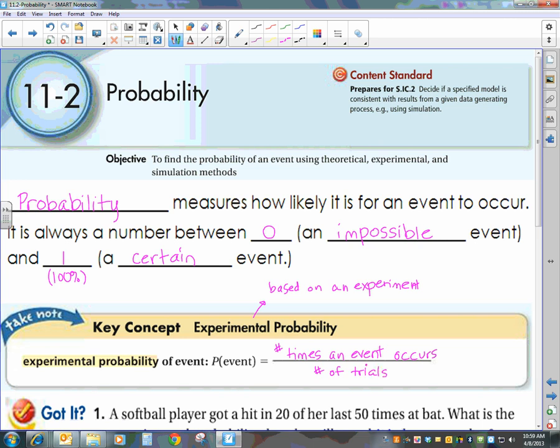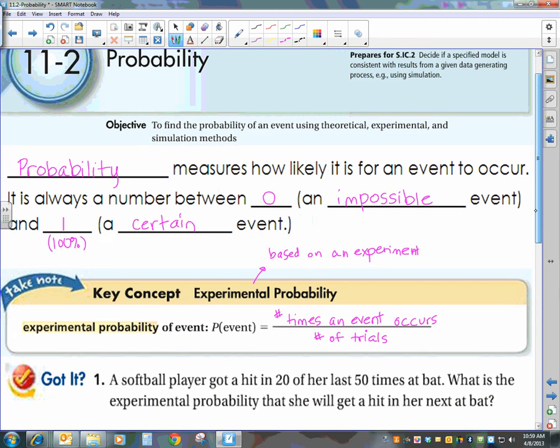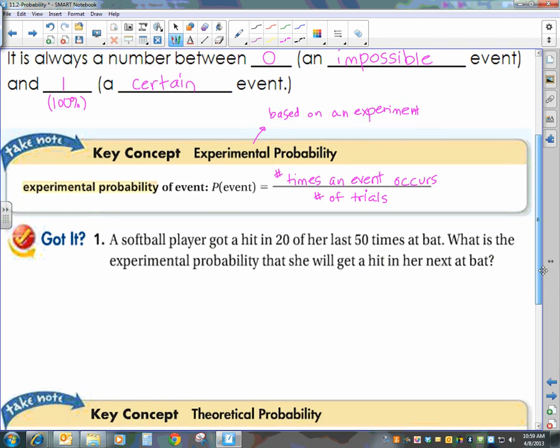So look at our batting problem, our softball player got a hit in 20 of her last 50 times at bat. What is the experimental probability that she will get a hit at her next bat? So we're looking for the probability of a hit, and that is the number of times that she's gotten a hit over the total number of times she was at bat.